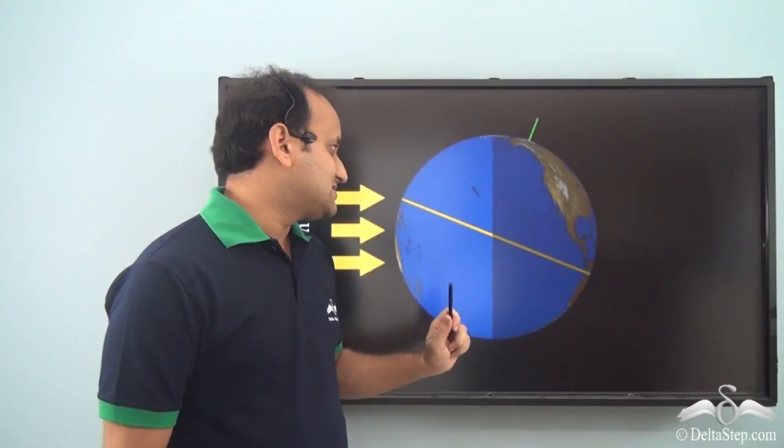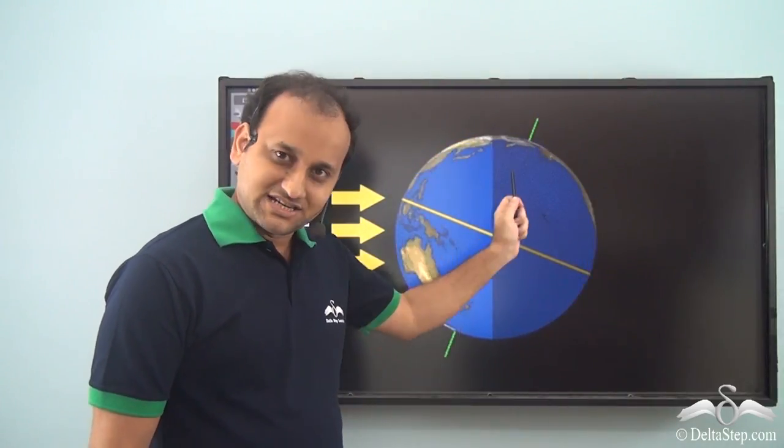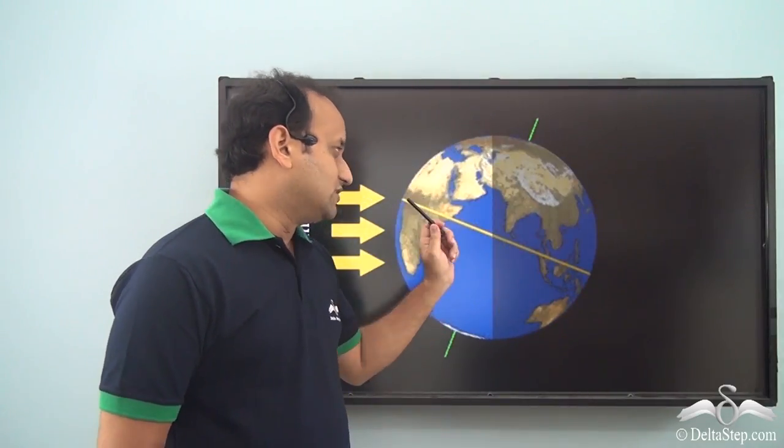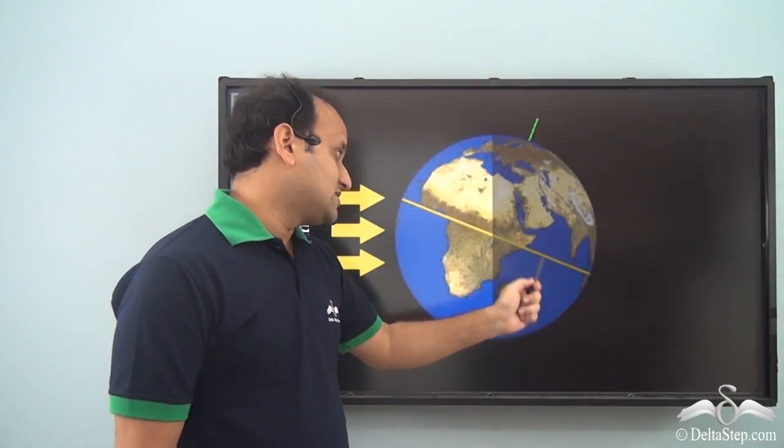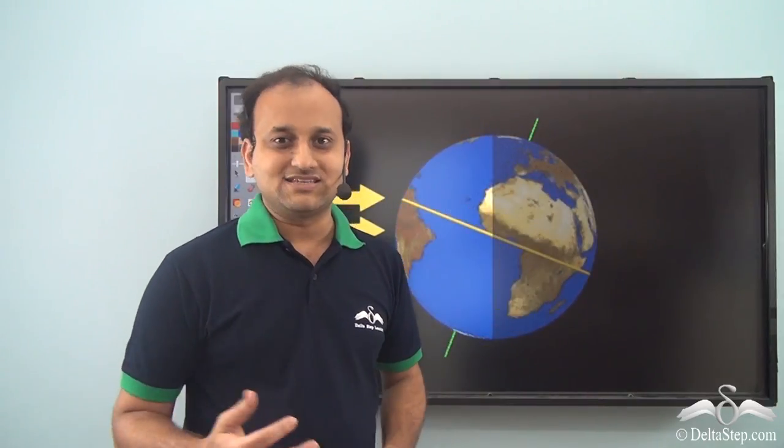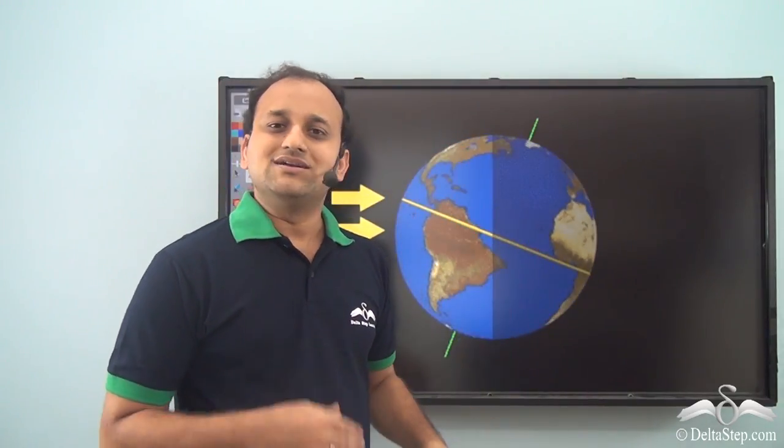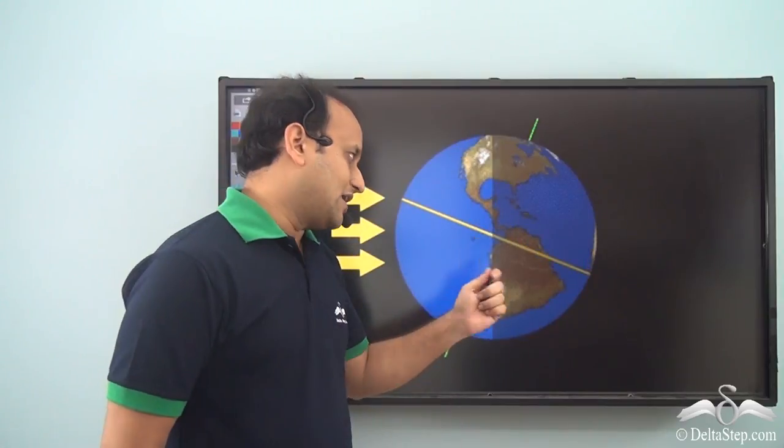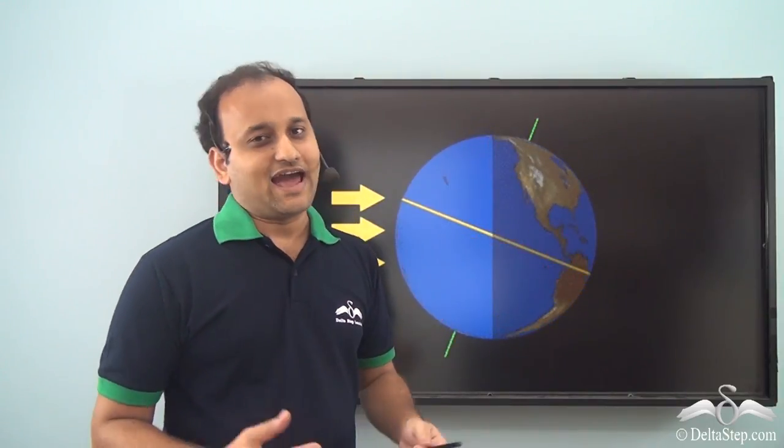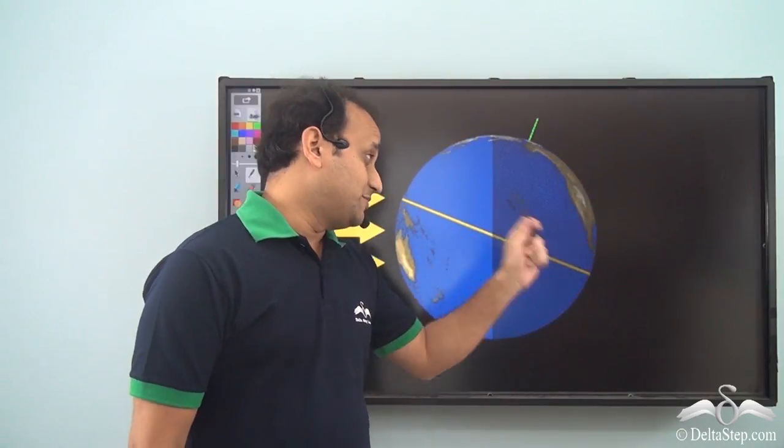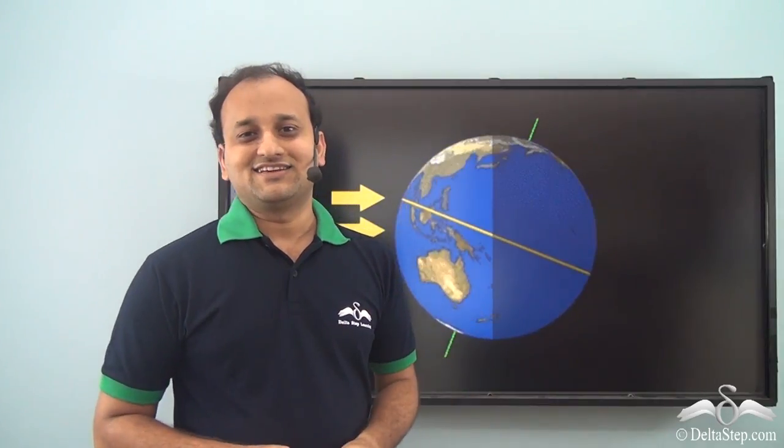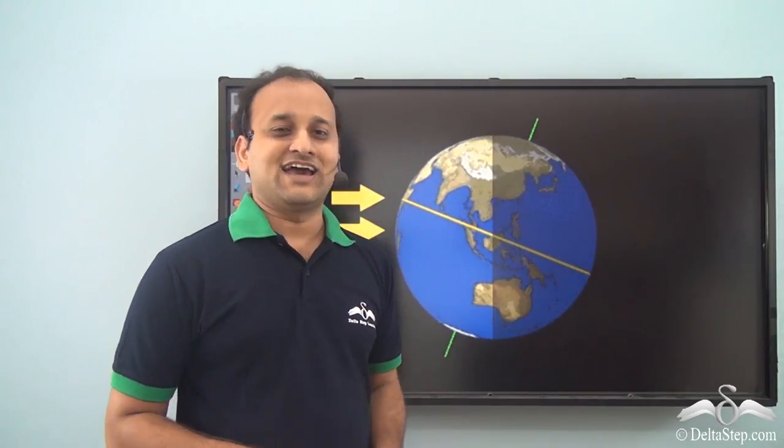So you see, our earth rotates at an angle, a tilted imaginary axis line, and on that axis line when the earth rotates, sometimes a part of it faces the Sun and a part of it doesn't face the Sun. So the part that is facing the Sun has day while the other part has night, and that's how we have day and night all the time.